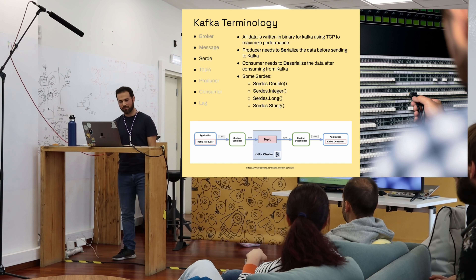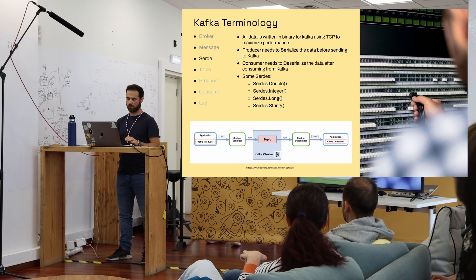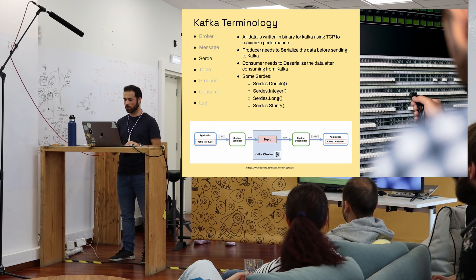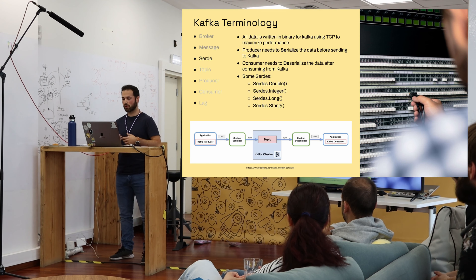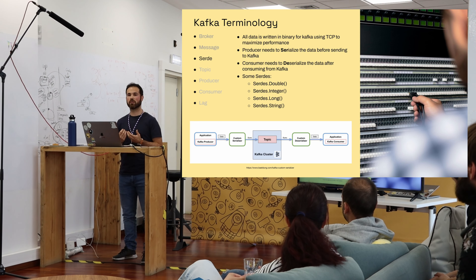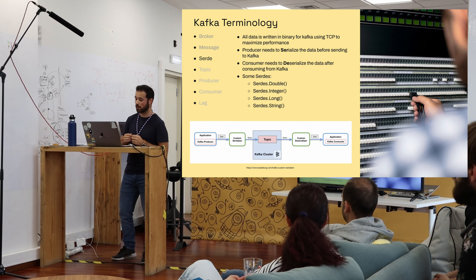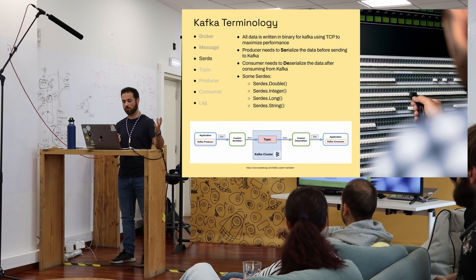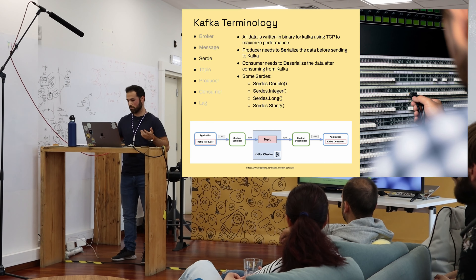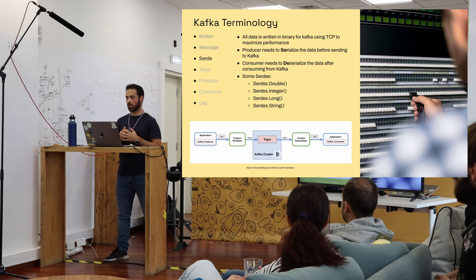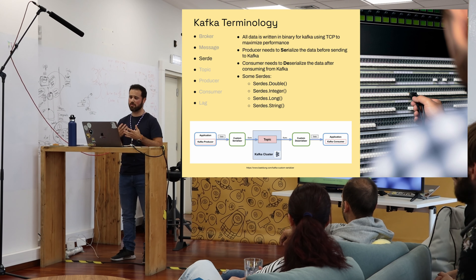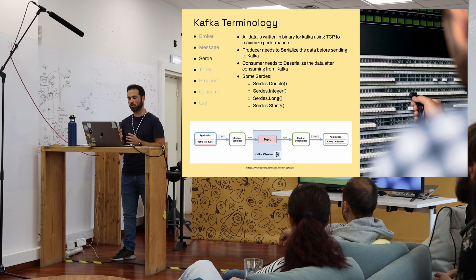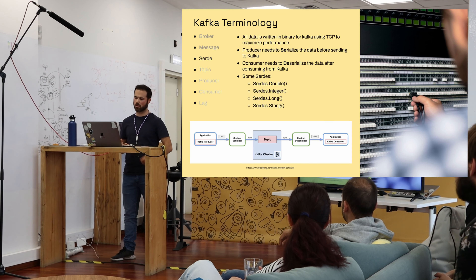In this diagram, you have an application, a cluster with one or more topics, and a consumer. Your application writes a string, double, or JSON, so you need a serializer to convert it to bytes. The consumer needs a deserializer to convert back from bytes to whatever it wants. All communication is done over plain TCP to maximize performance. You also have built-in SERDEs — serializer/deserializers — for types like double, integer, long, and string.